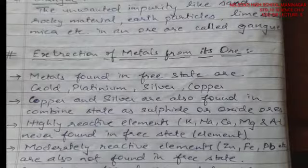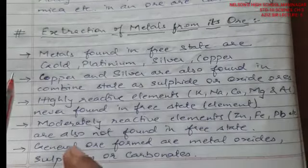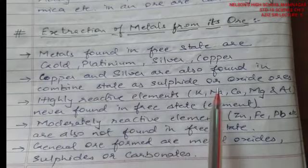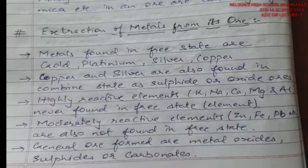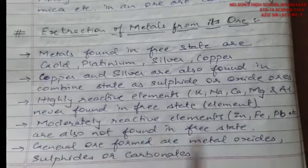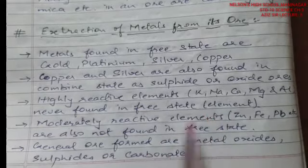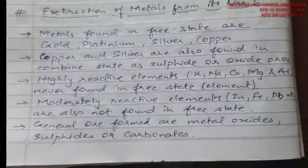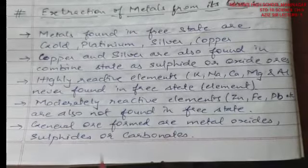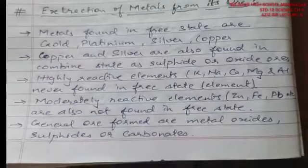Regarding extraction of metals from ores: metals found in free state — that is, directly obtainable from the earth's crust — are gold, platinum, silver, and copper. However, silver and copper are generally not always found in free state; they are also found in sulphide and oxide forms. Highly reactive elements like potassium, sodium, calcium, magnesium, and aluminium are never found in free state and need to be extracted. Moderately reactive elements like zinc, iron, and lead are also not found in free state and need to be recovered from the earth's crust.